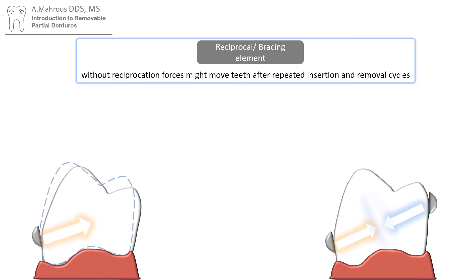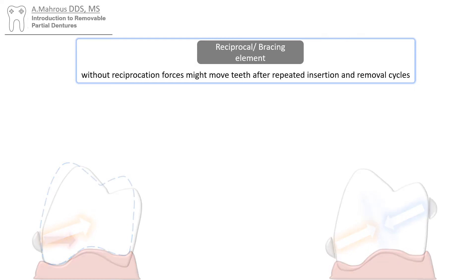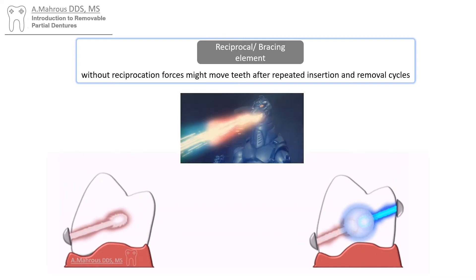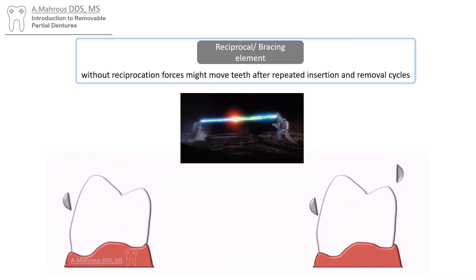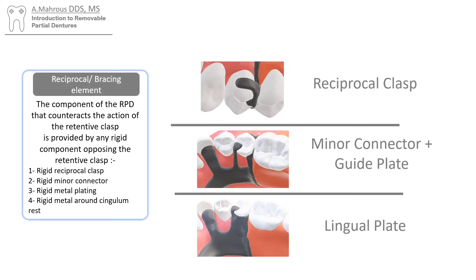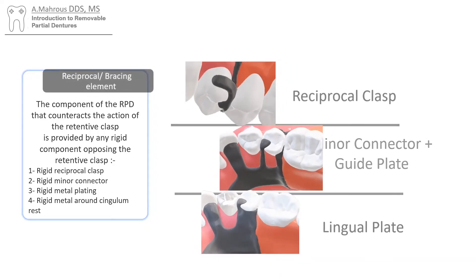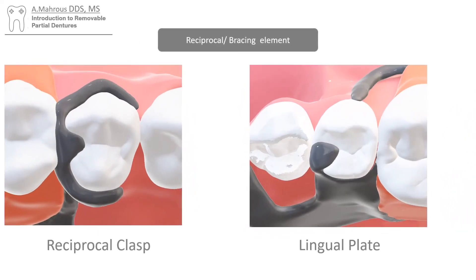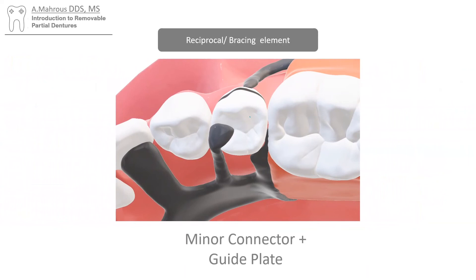Whenever a clasp crosses over a height of contour, it tends to push the tooth in the opposite direction. Because of this, we need a reciprocating force to prevent the tooth from moving orthodontically over time. This feature is called reciprocation and is provided by a reciprocating element. Reciprocation can be provided by any rigid component on the other side of a retentive clasp, like a reciprocal clasp, minor connectors and plates, or just a metal plate. A reciprocal clasp or a lingual plate provide reciprocation by directly opposing the retentive forces, while a minor connector and plate provide two smaller forces to balance out the major retentive force.